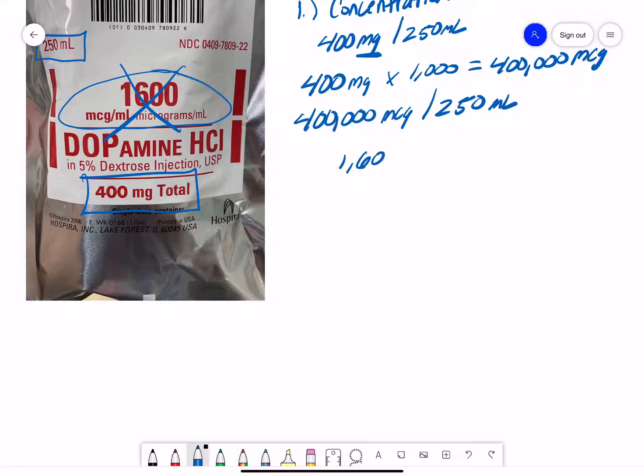So 400,000 divided by 250. If you work that out, it comes out to be 1,600 micrograms per ml. That is the concentration of our medication.